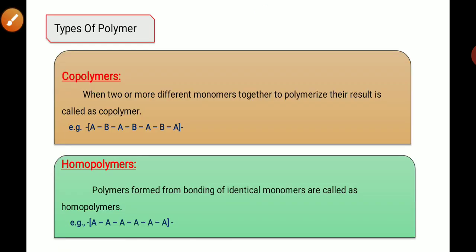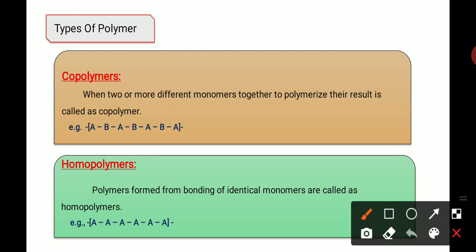Next is the types of polymer. There are two main important types of polymer: first is the copolymer and second is the homopolymer.